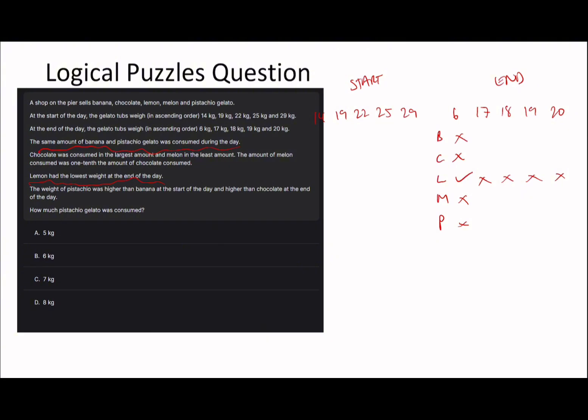Lemon has the lowest weight at the end of the day, so lemon was here at 6 kg. The weight of pistachio was higher than banana at the start of the day, so it wasn't there. Higher than banana at the start and higher than chocolate at the end. If it was higher than chocolate at the end, it can't be 17, and so chocolate can't be 20, and so banana can't be 29 if pistachio was higher than banana.